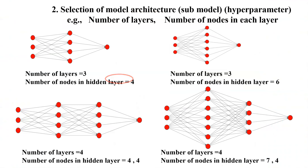there are infinitely many model architectures that we can choose from, and different model architectures of neural network have different number of layers and different number of nodes in each of the layers. So for example, here I have given